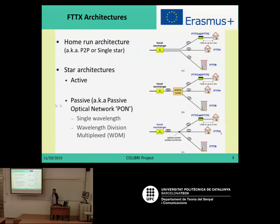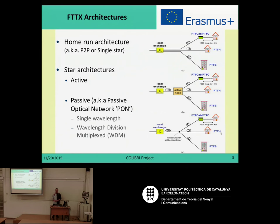Finally, it was proposed what is called the passive optical network, or PON, where the active node is substituted by an optical power splitter or combiner. This is a very simple device which is very cheap, it is passive, and you can place it wherever you want — and this is the economic miracle of this kind of network.